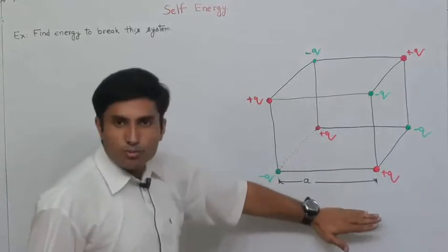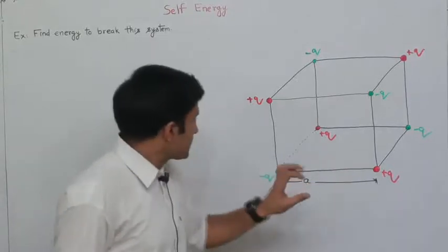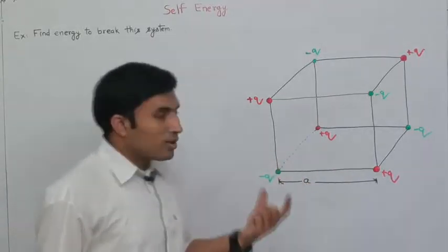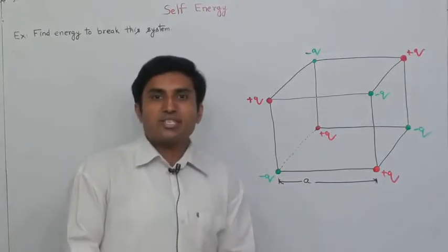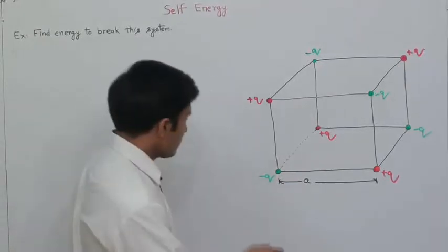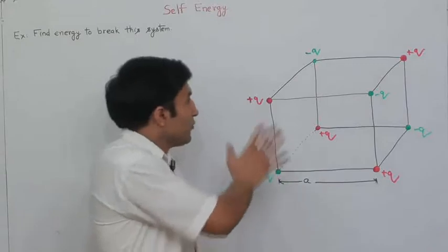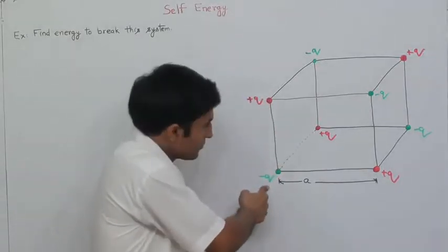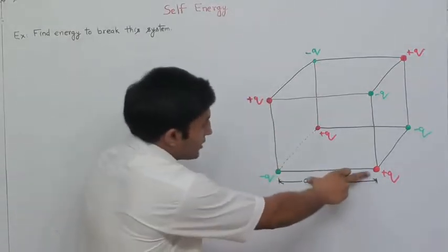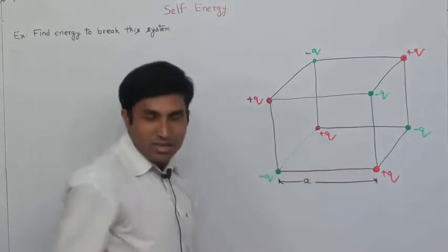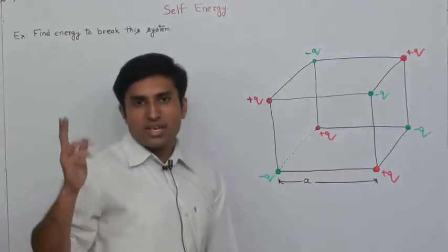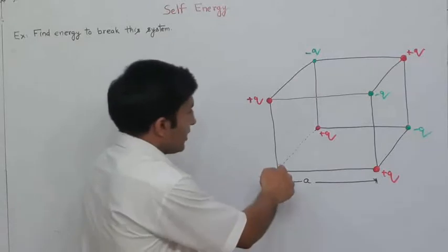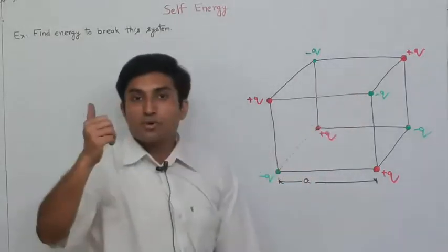So this is a cube with side a. Let's identify which sides are of equal length. For example, I'm taking this point. Each point, say this one, is of equal length to this. These two are, these three are of equal length. This and this are diagonally opposite.